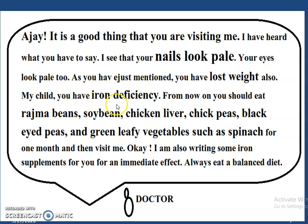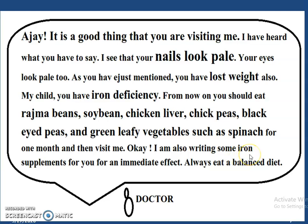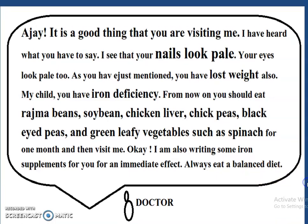'My child, you have iron deficiency. From now on, you should eat rajma beans, soy bean, chicken liver, chickpeas, black-eyed peas, and green leafy vegetables such as spinach for one month, and then visit me. I am also writing some iron supplements for you for an immediate effect. Always eat a balanced diet. Remember this.'